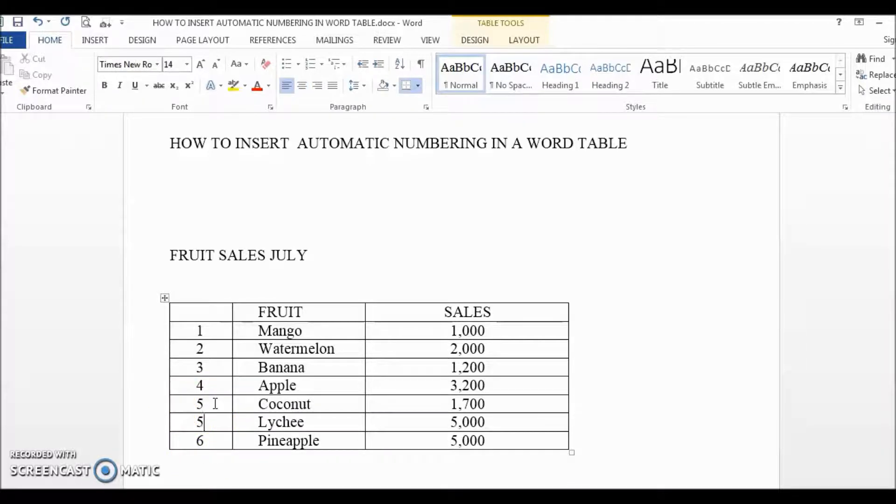This is a demo table so it is quite short, but in reality you could be working with really long tables that have hundreds and hundreds of rows. So a better solution is to insert an automatically numbered list, and to do that we first need to select the entire first column.